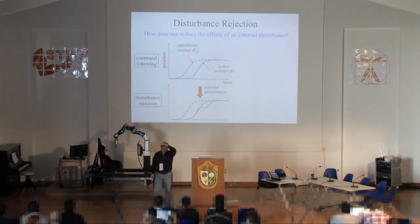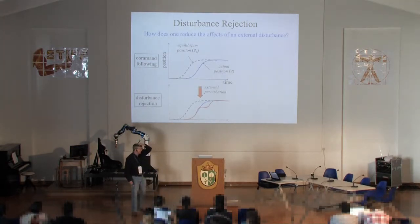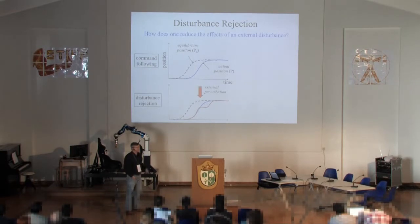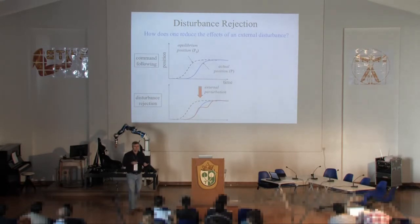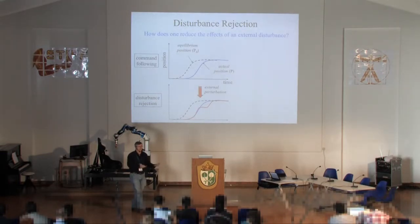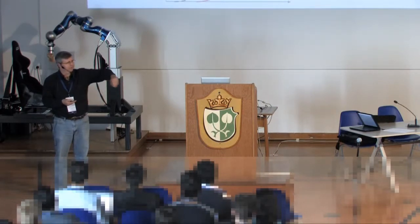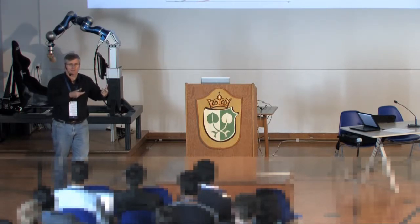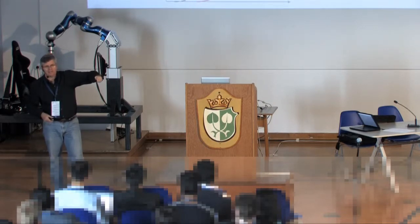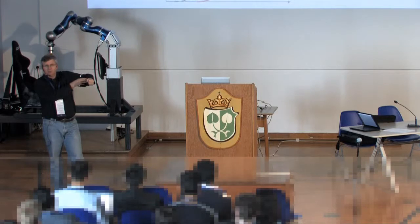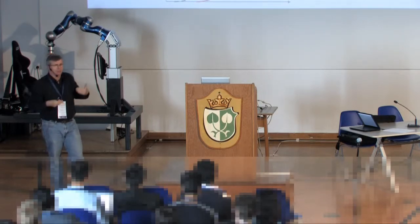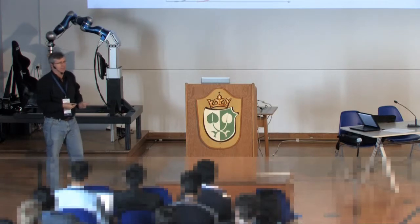Now the question is: what can we use impedance for? You can modulate impedance. If I'm sitting relaxed, I have fairly low impedance. But muscles have the property that when you activate them, they get stiffer. So if I co-contract my agonist and antagonist muscles, my arm becomes more rigid — more stiff. By co-contracting, I have the possibility of modulating impedance.